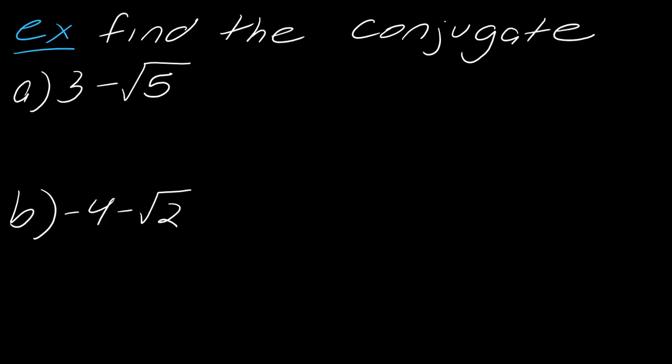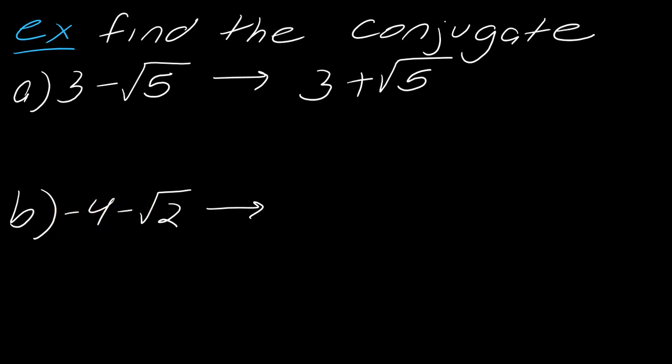So what does that mean the conjugate will be for these two examples? If I have 3 minus the square root of 5, then the conjugate will be 3 plus the square root of 5. What about negative 4 minus the square root of 2? It doesn't matter that there's a negative here — it's just what's in between the two terms. So this will become negative 4 plus the square root of 2. That's the idea of the conjugate.